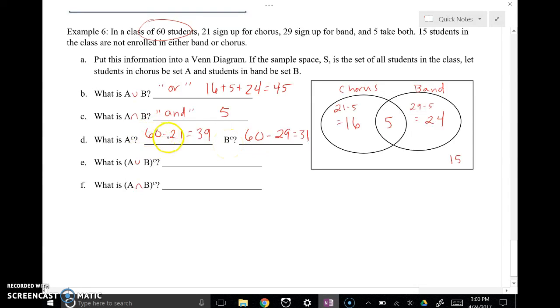I went ahead and did everybody who's not in band as well. Notice I took the total and subtracted the number of people that were enrolled and got my number of people who were in the complement or not in chorus and not in band. Notice that the number of kids that are in both do count toward chorus and do count toward band.